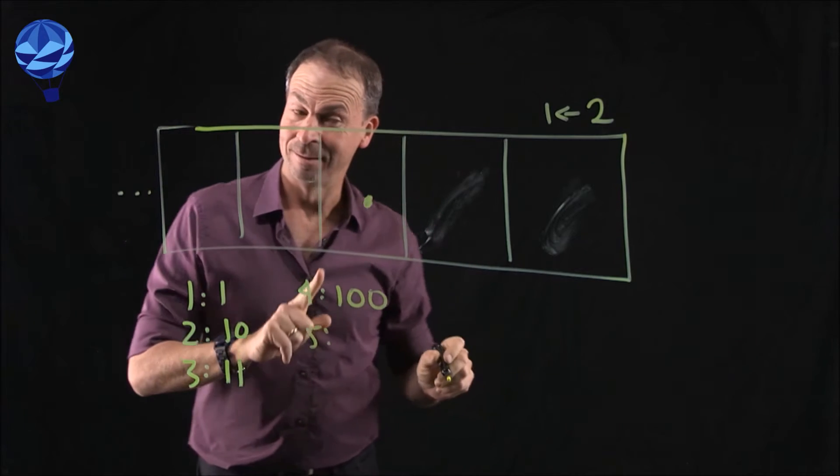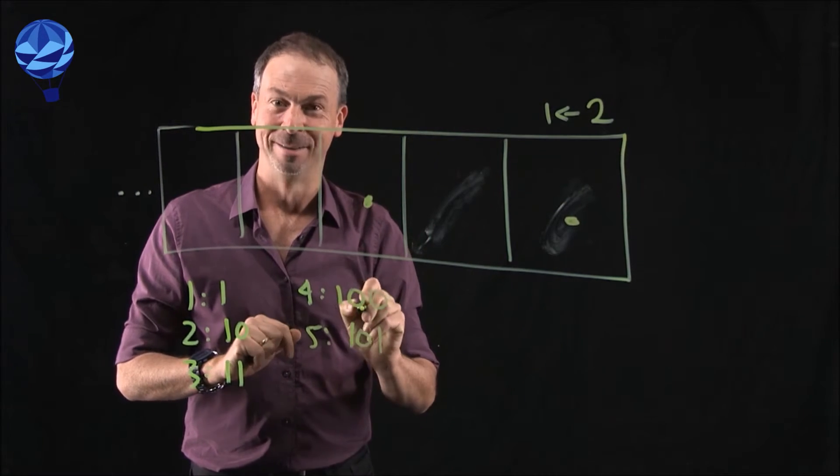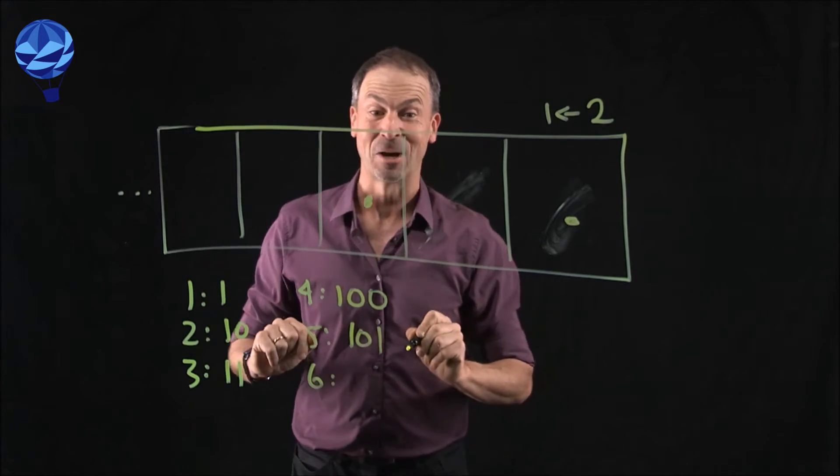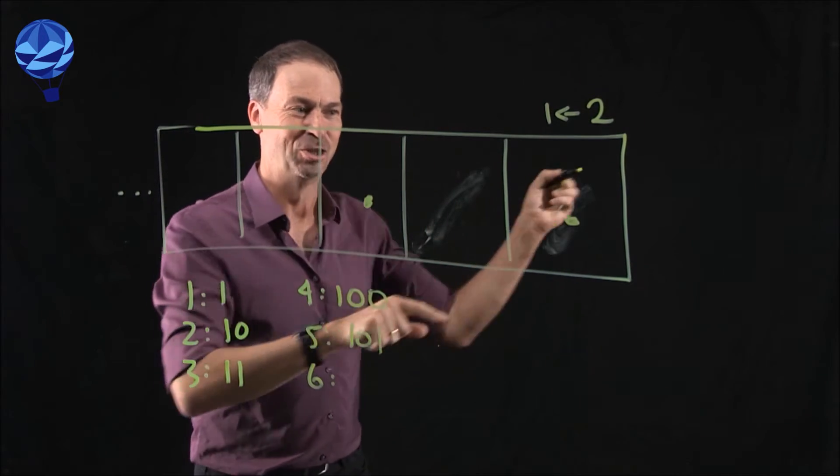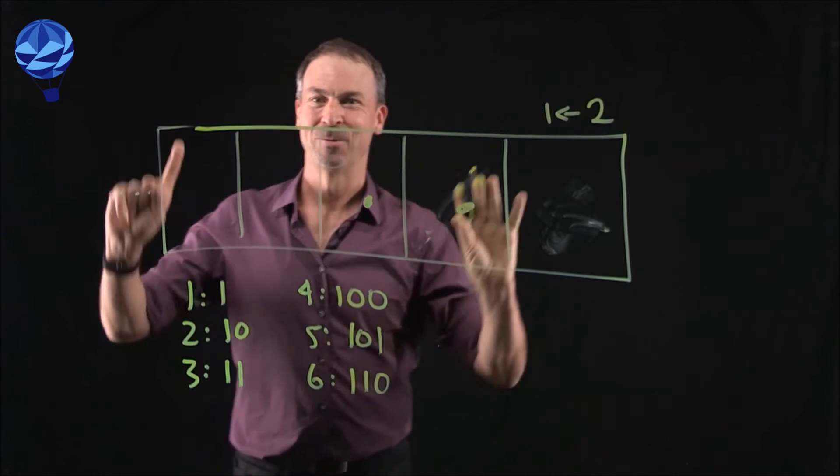Can you see what the code for five is going to be? Zoom. One, zero, one. How about six? Can you see what the code for six is going to be? Zoom. Kaboom! Dot. One, one, zero. Great.